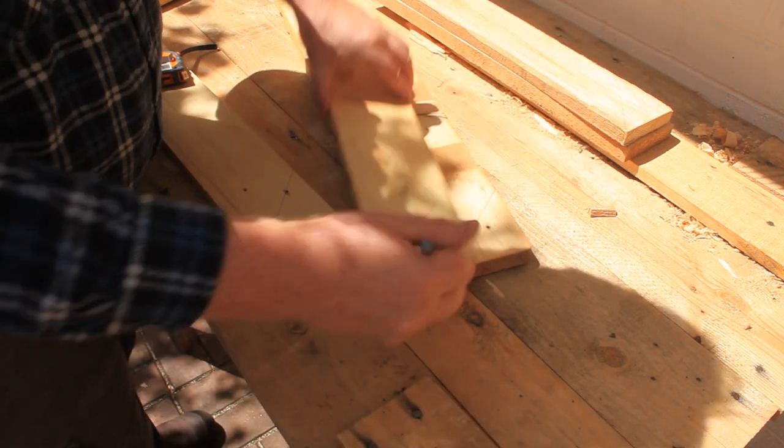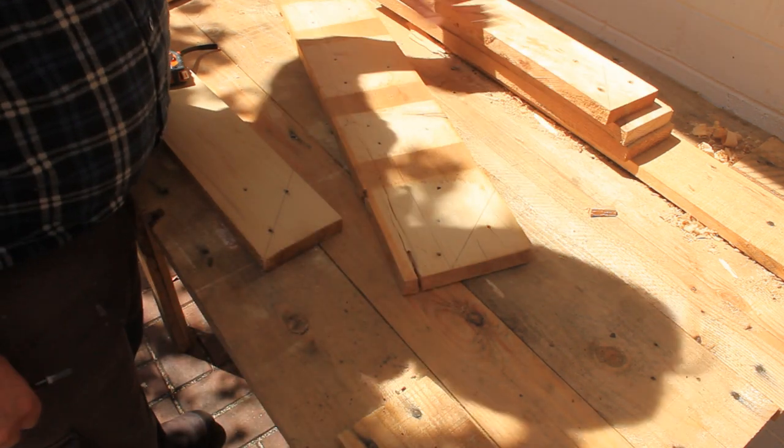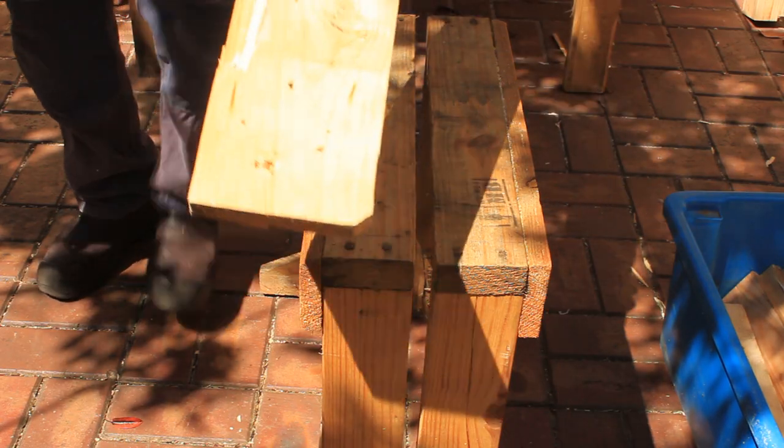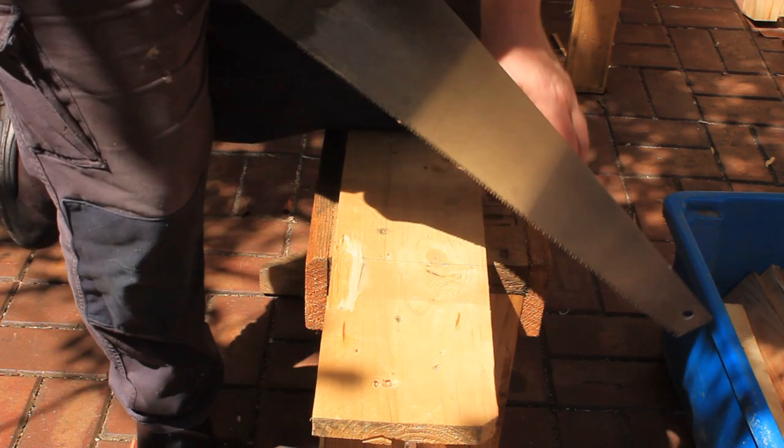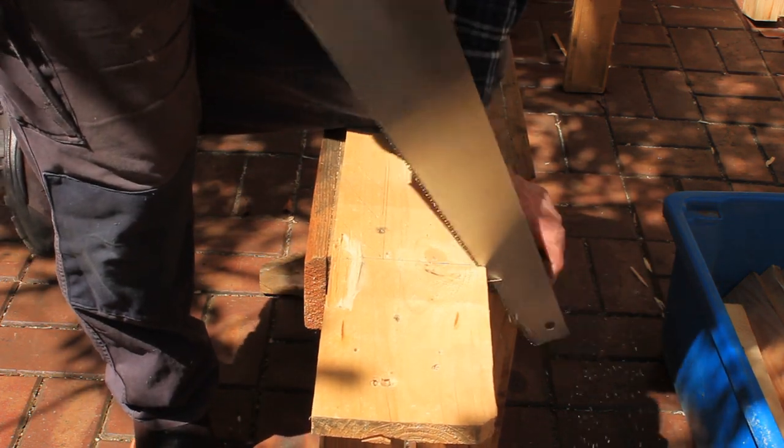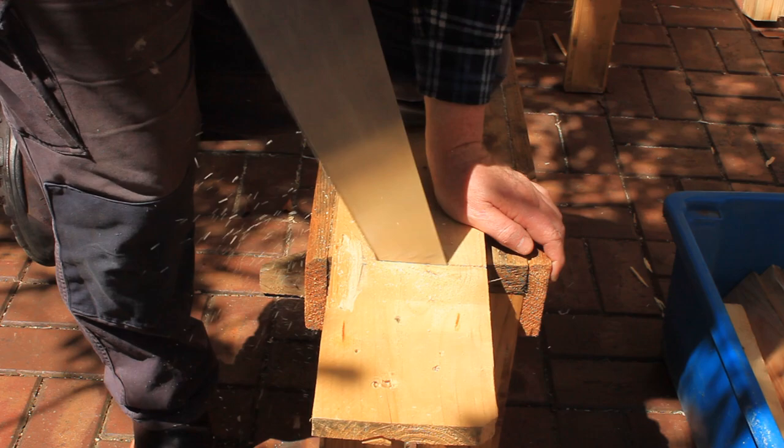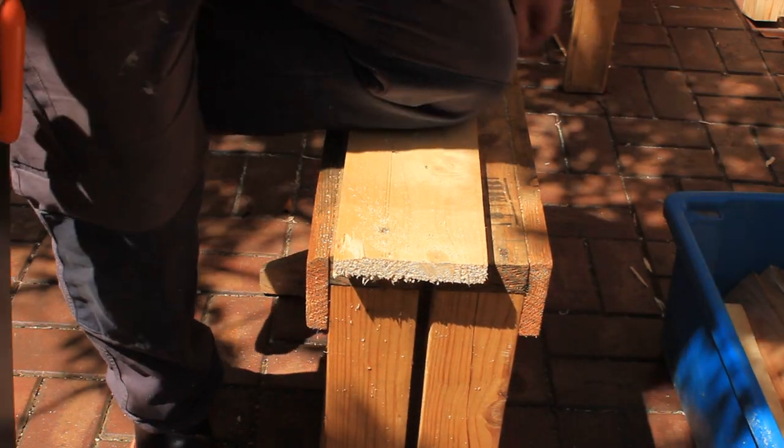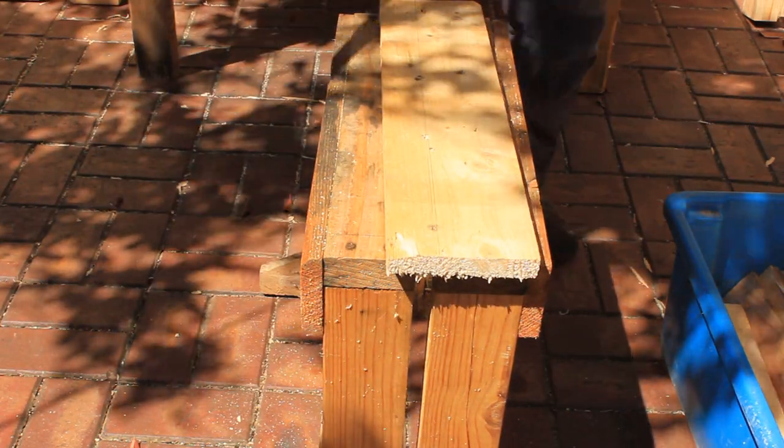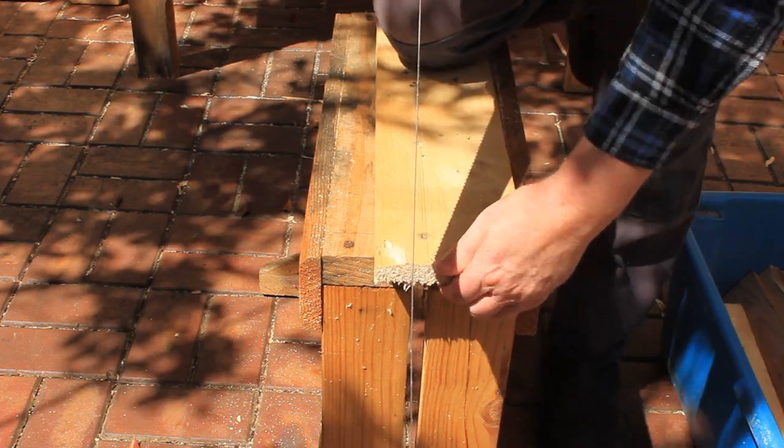Repeat this process for the other three wide boards. Take the wide boards to your saw stool and cut off the waste end. Now set yourself up and make the long rip cut.